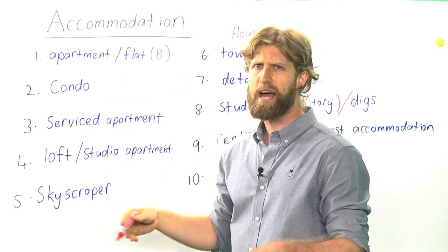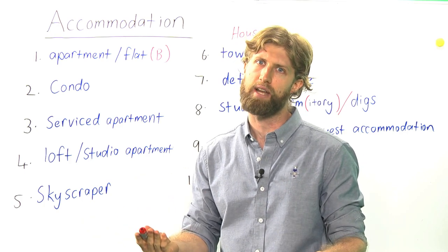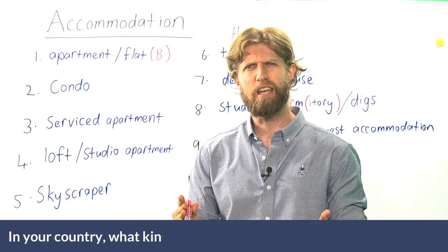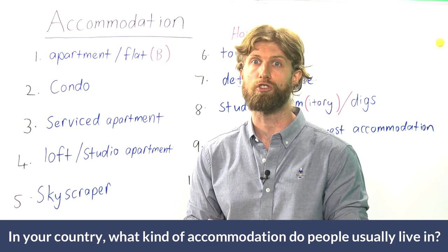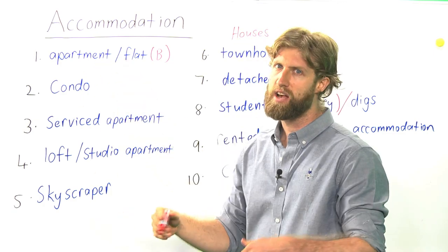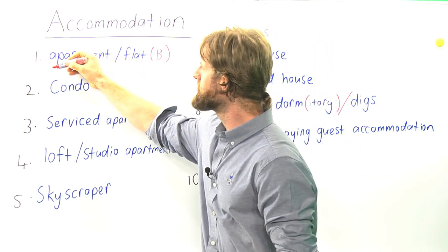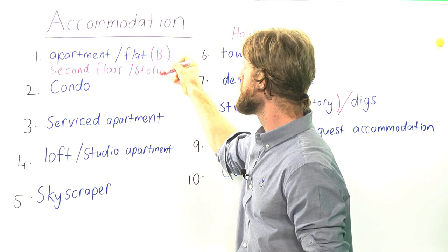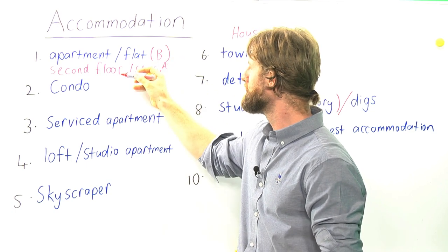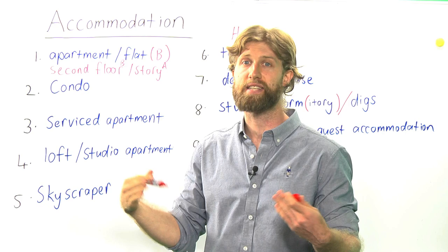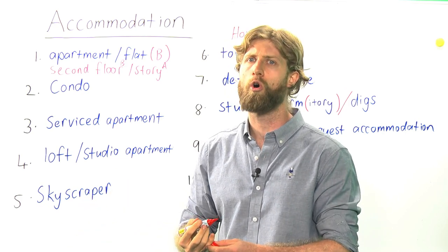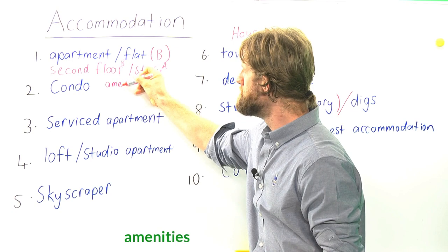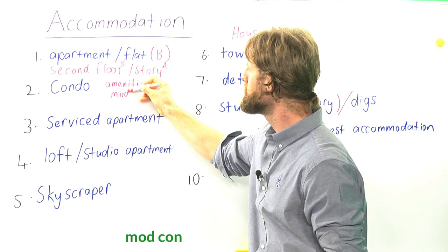Let us look at some examples and sentences we can use to describe our accommodation. Questions like: what kind of accommodation do you live in? Or, in your country, what kind of accommodation do people usually live in? For apartments, we can say: I live on the second floor, or second story. Story is American English and floor is British English. I live on the second floor of a tall apartment building.